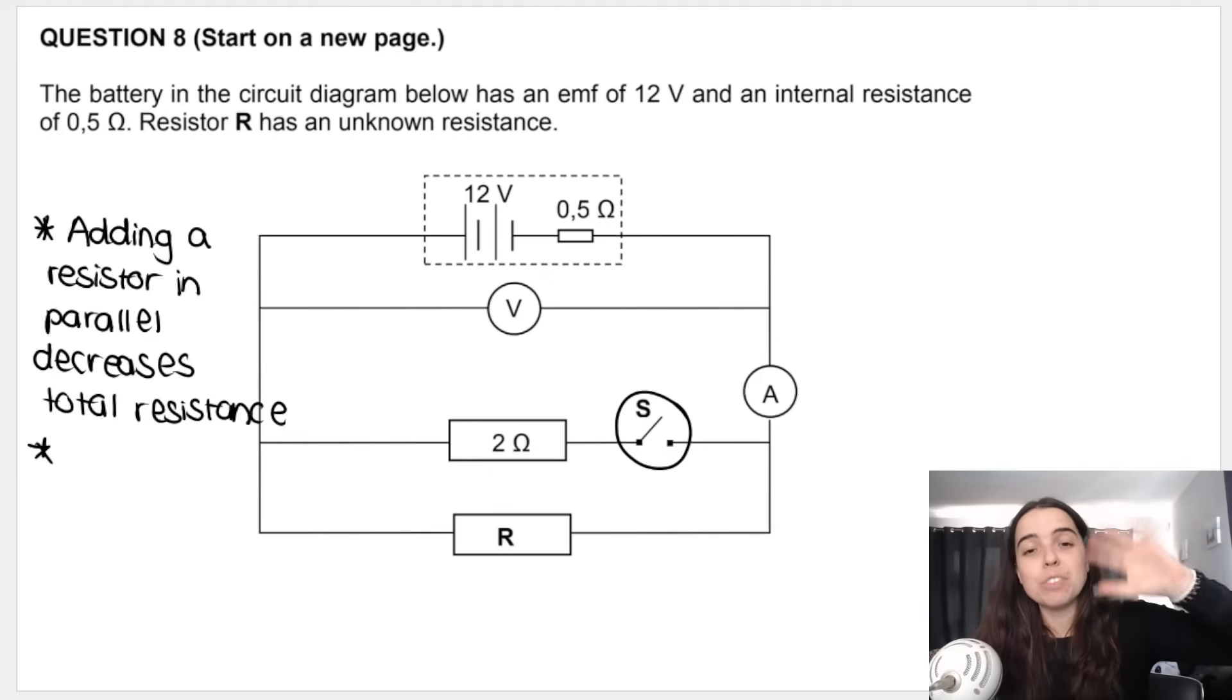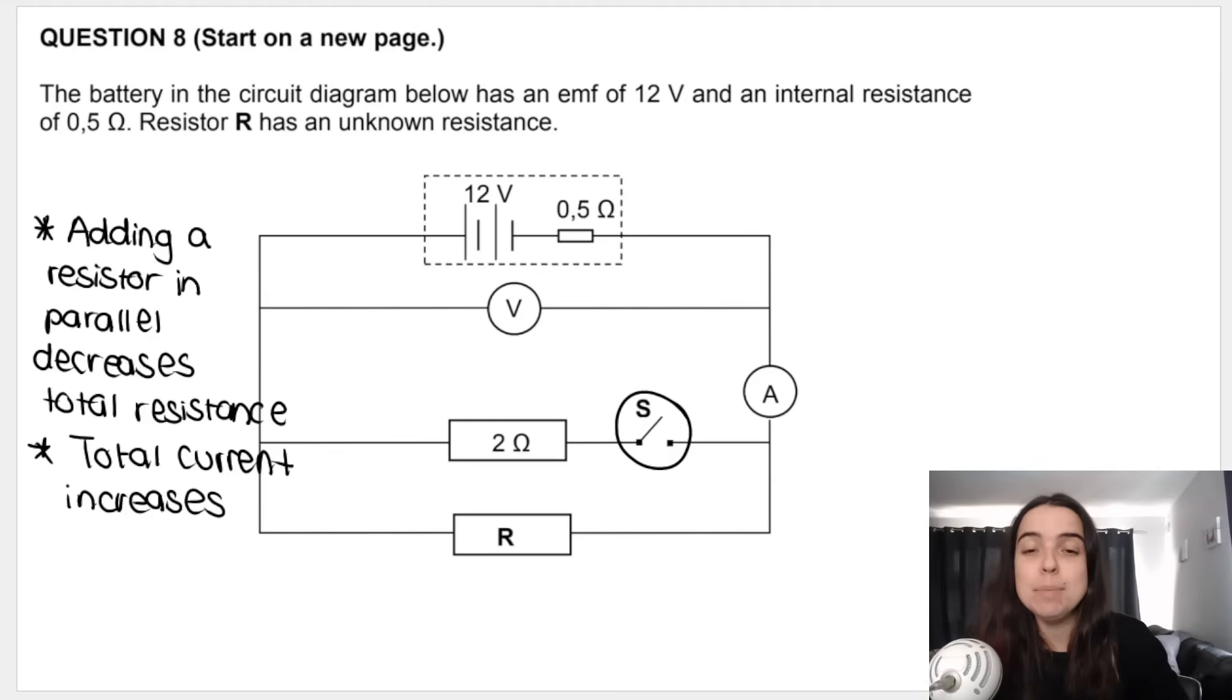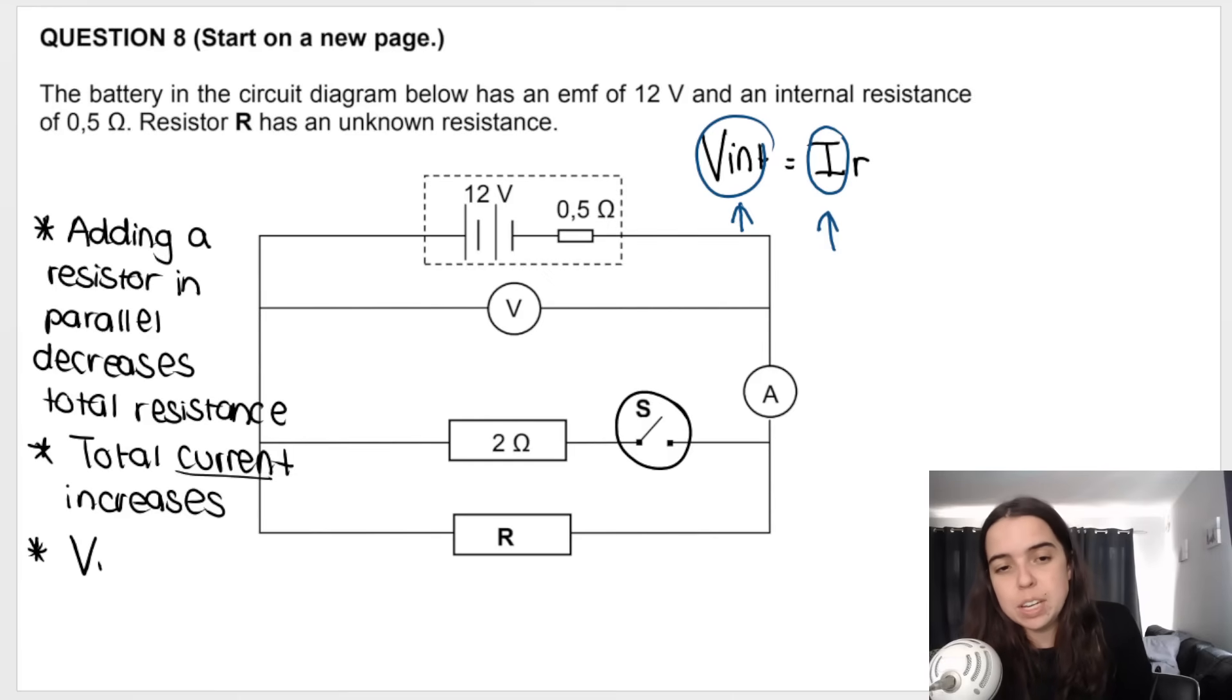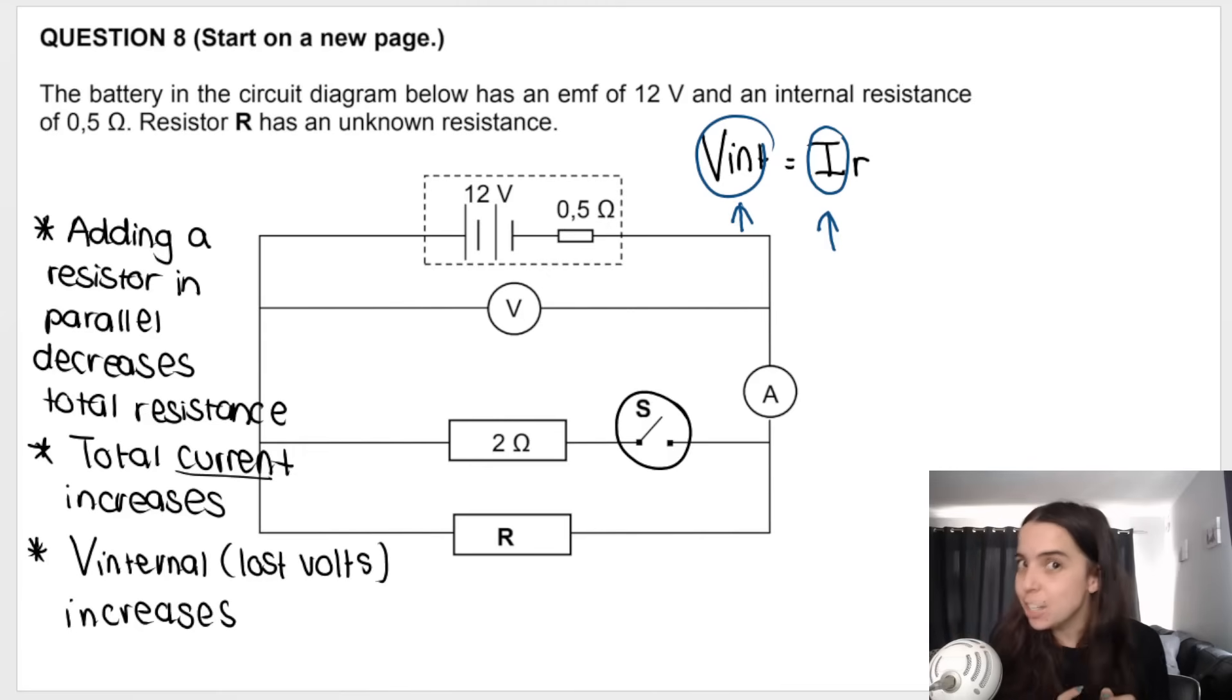So if total resistance decreases, total current increases. They do opposite things. Then as soon as you're done telling me about what current does, immediately after that, because we have internal resistance and there's EMF, we need to refer to V internal next. The total current, whatever changes are made there, immediately impacts V internal. So the way I want you to think about it is V internal is equal to I times R internal. So if current increases, if this goes up, V internal will go up. If current goes down, V internal will go down. So whatever current does, V internal does the same thing. So V internal, which is also called lost volts, increases.